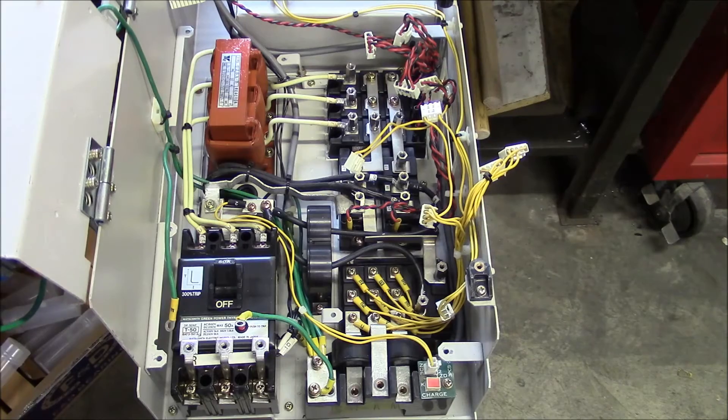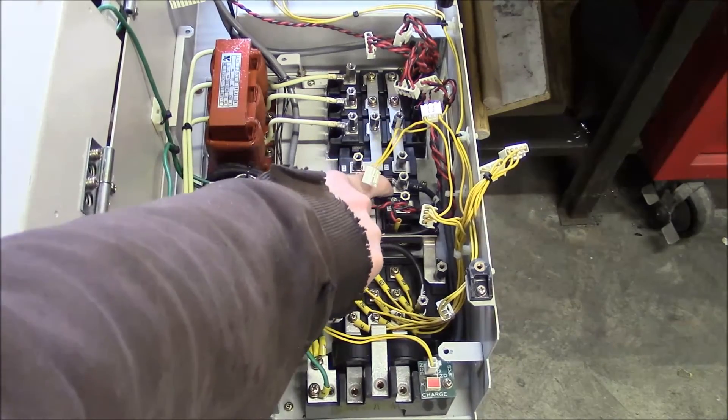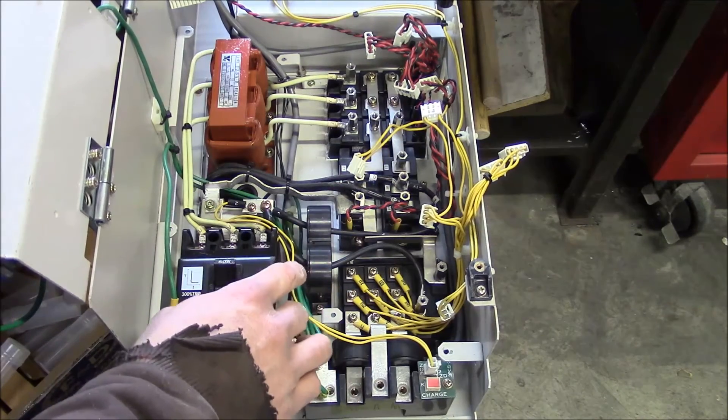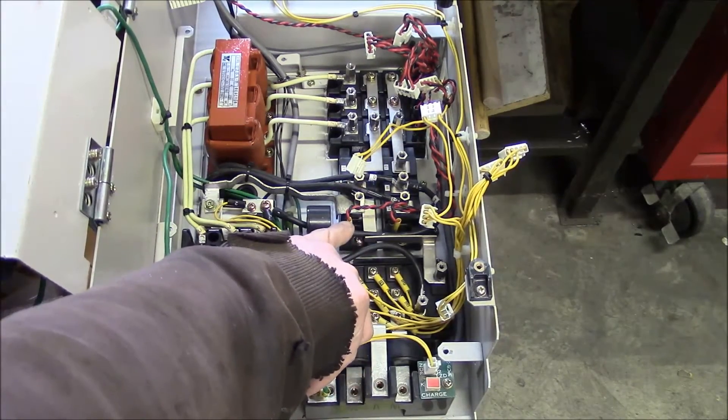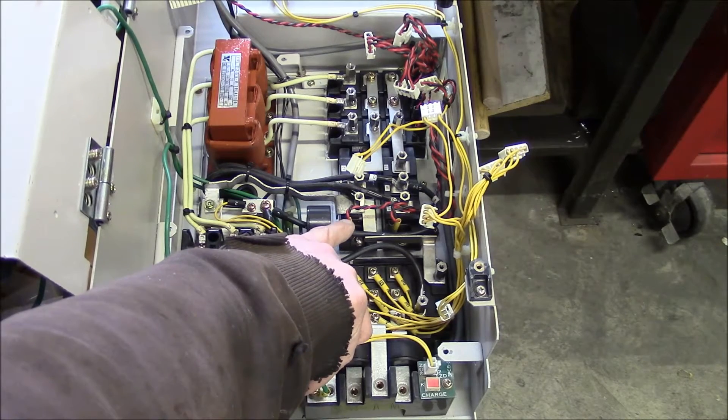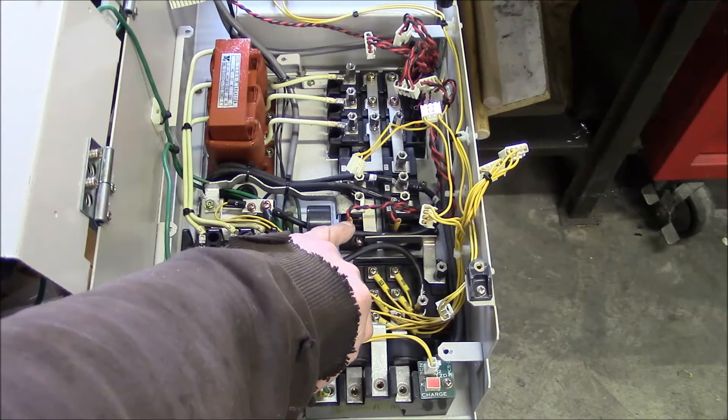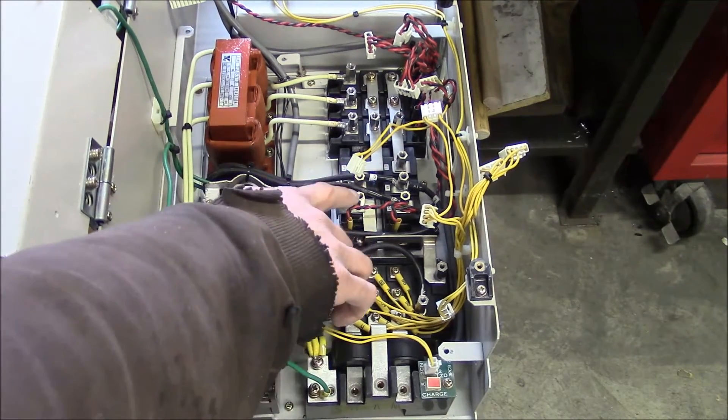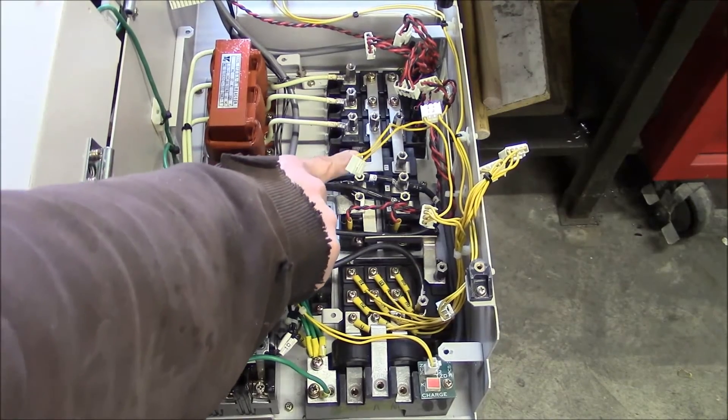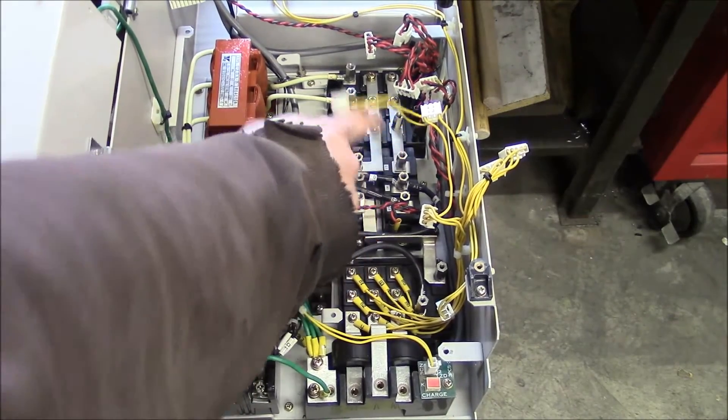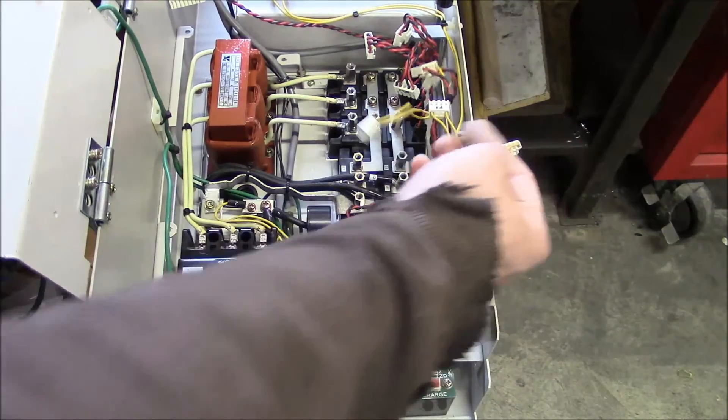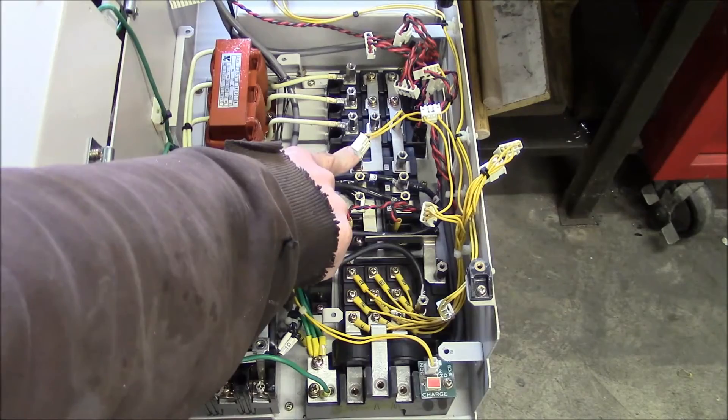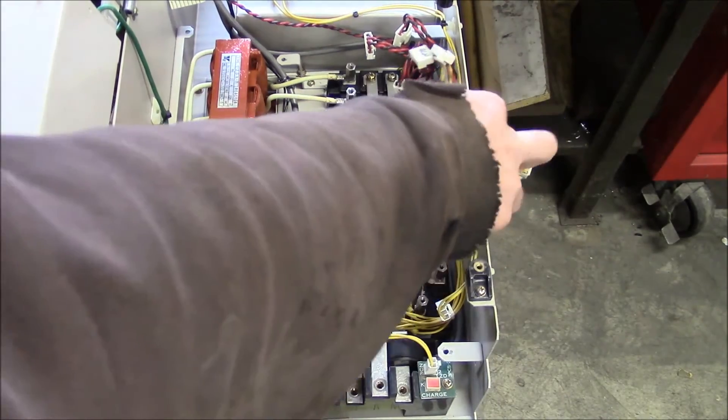Anyway, I took these two IGBT modules out and bench tested them and I applied a 5-volt DC circuit to the emitter and the gate and I was able to test the switching on the IGBTs. And they both switch correctly. So when the voltage is applied to the gate, the current is allowed to flow from the collector to the emitter. So that part of them is working correctly.